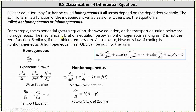In contrast, the mechanical vibrations equation below is non-homogeneous as long as f of t is not the zero function — notice here t is the independent variable. Similarly, if the ambient temperature a is non-zero, Newton's law of cooling is also non-homogeneous.